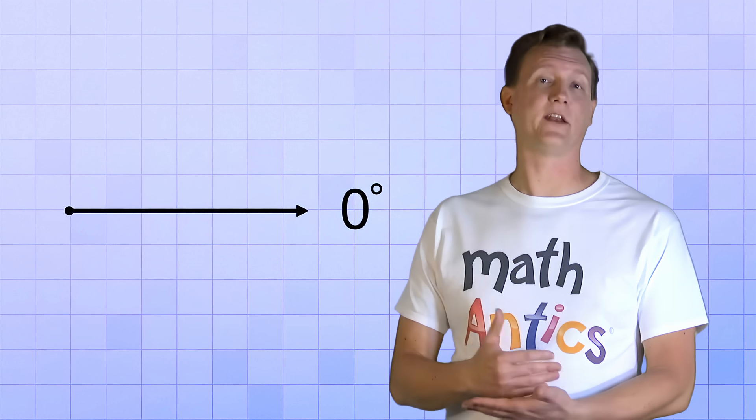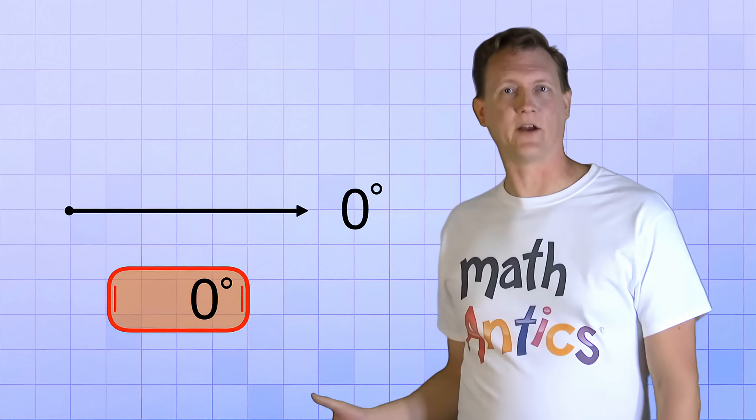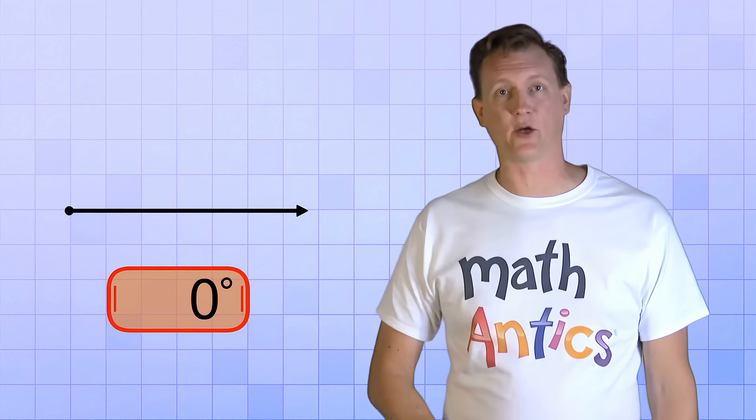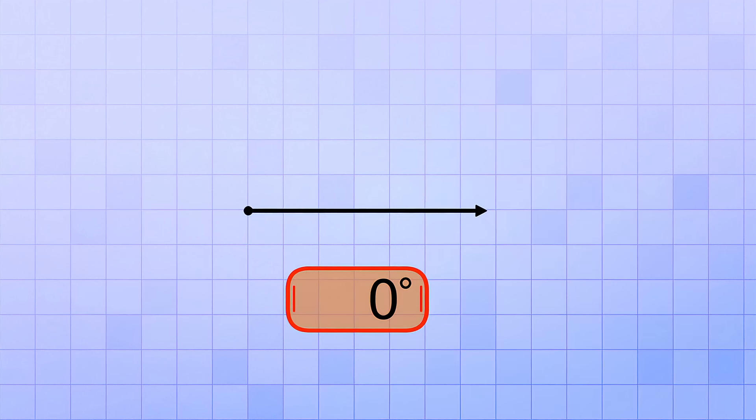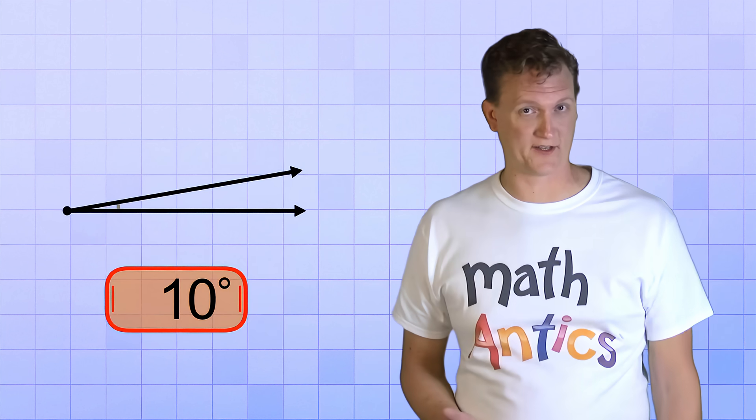Instead, we're going to keep on rotating our top ray and watch the angle get bigger and bigger. This special readout here will tell us how many degrees our angle measures. Now let's start out slow… 1 degree, 2, 3, 4, 5, 6, 7, 8, 9, and 10. Now let's hold it there for a second. So this is what 10 degrees looks like.